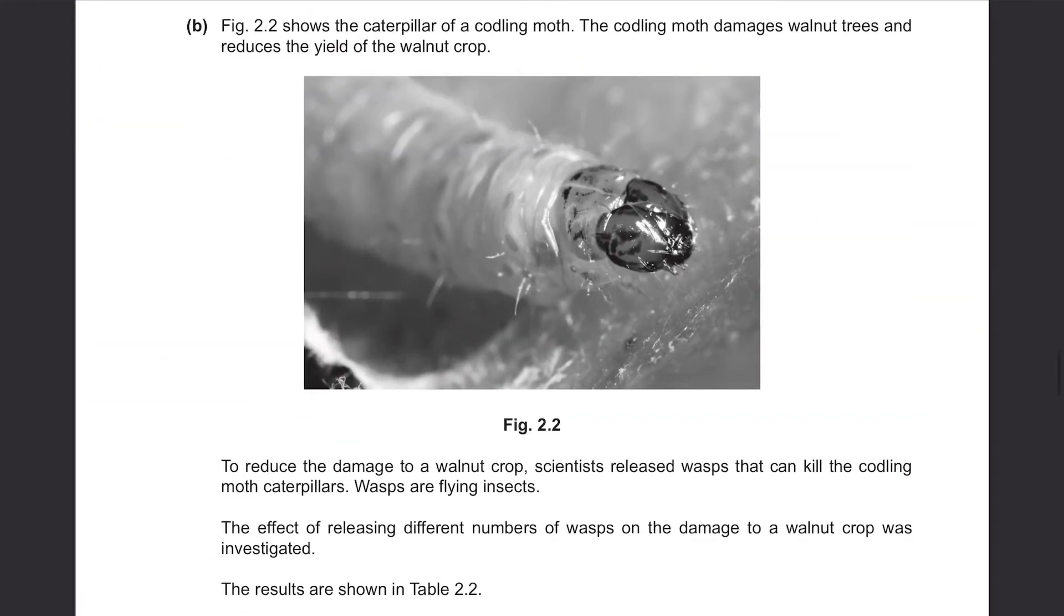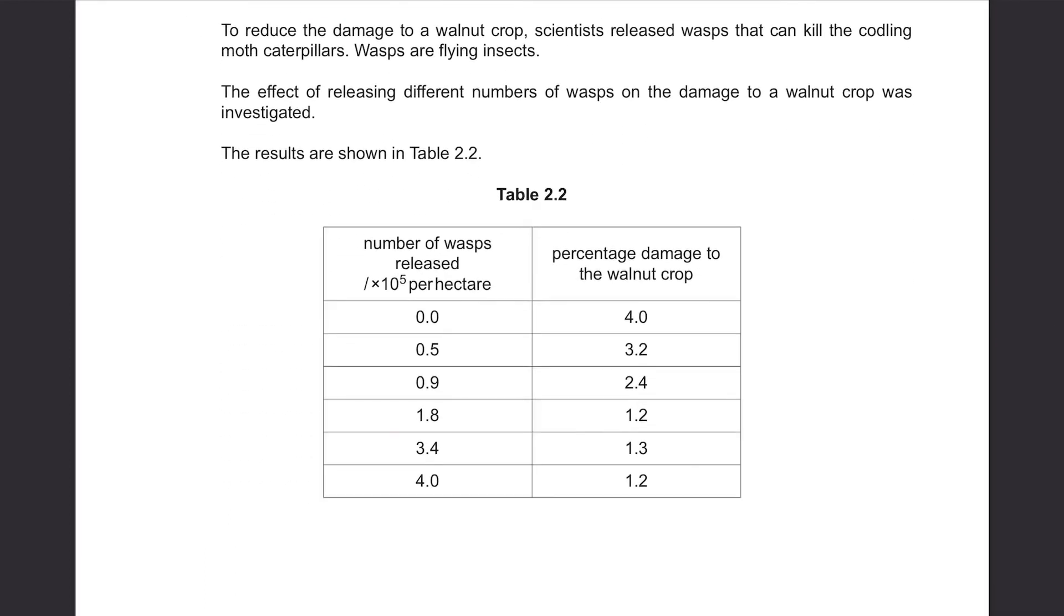Part B. Figure 2.2 shows the caterpillar of a codling moth. The codling moth damages walnut trees and reduces the yield of the walnut crop. To reduce the damage to a walnut crop, scientists released wasps that can kill the codling moth caterpillars. Wasps are flying insects. They look like bees. The effect of releasing different numbers of wasps on the damage to a walnut crop was investigated. The results are shown in table 2.2. Well, as they increased the number of wasps released, the percentage damage decreased. Which shows us that the more wasps there are out there, the less damage it is to the walnut crop.